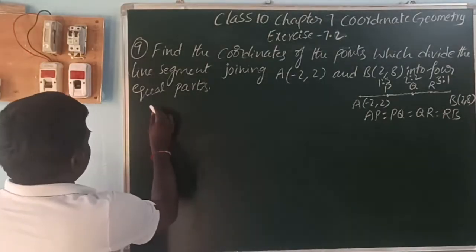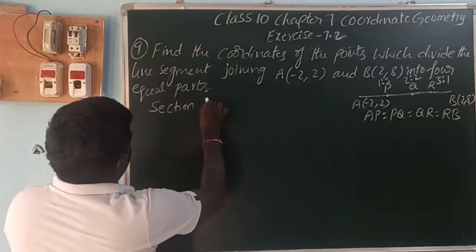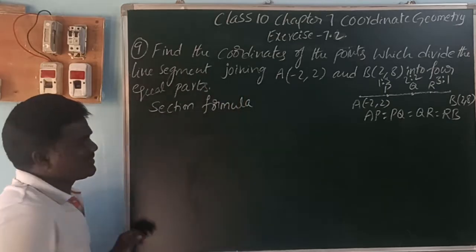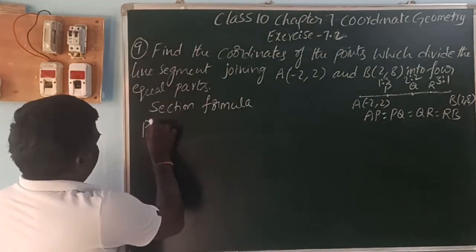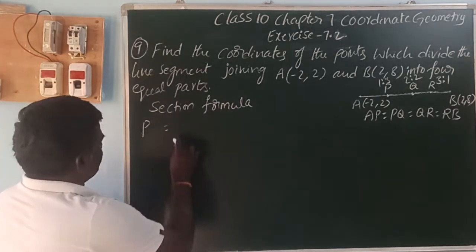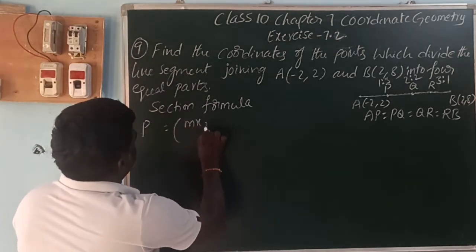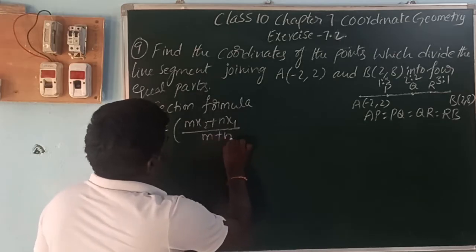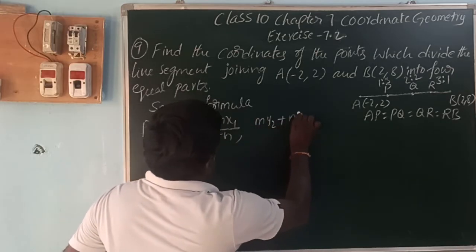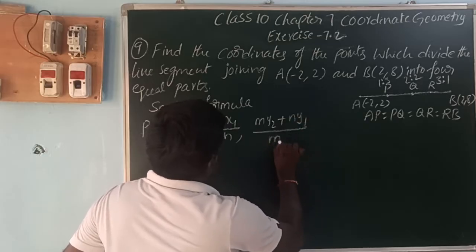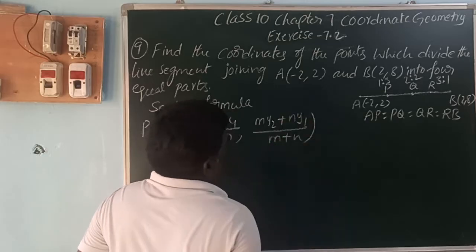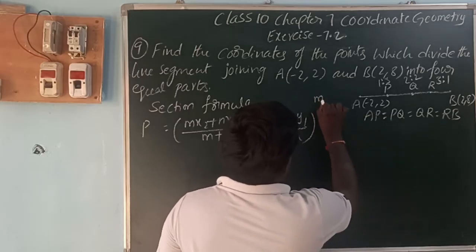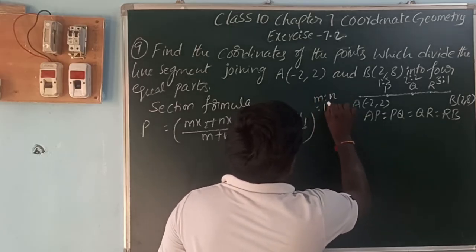Using the section formula: P(x, y) is equal to (mx₂ + nx₁)/(m + n), (my₂ + ny₁)/(m + n). At point P, the ratio is 1:3, so M to N is equal to 1 to 3.